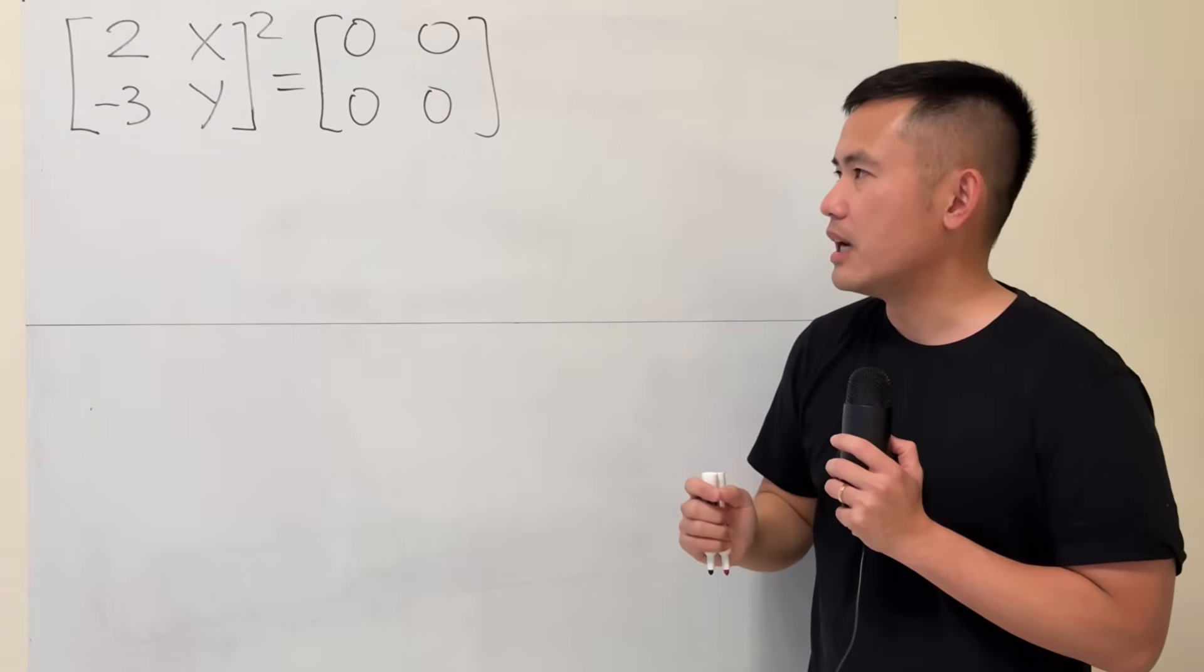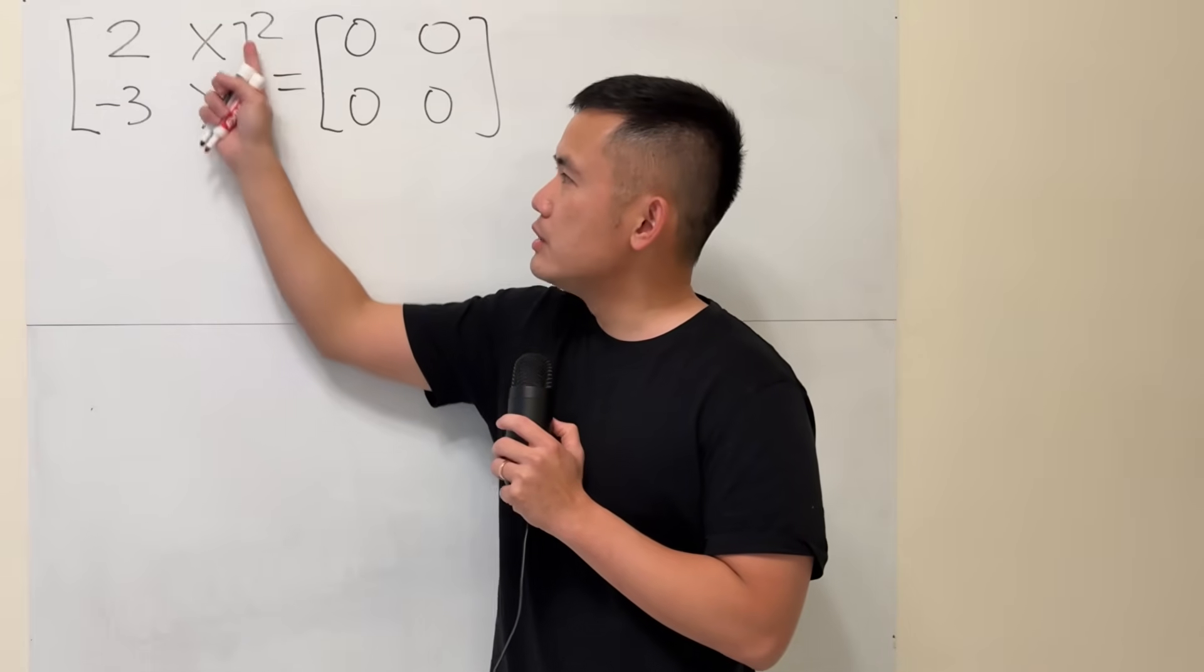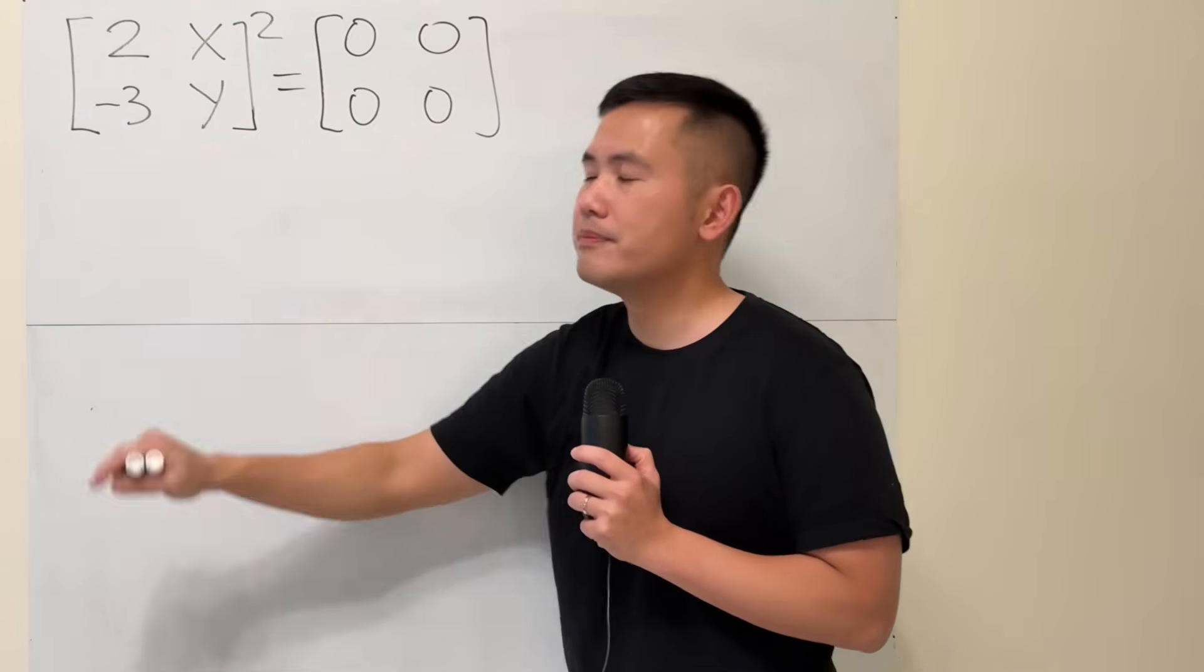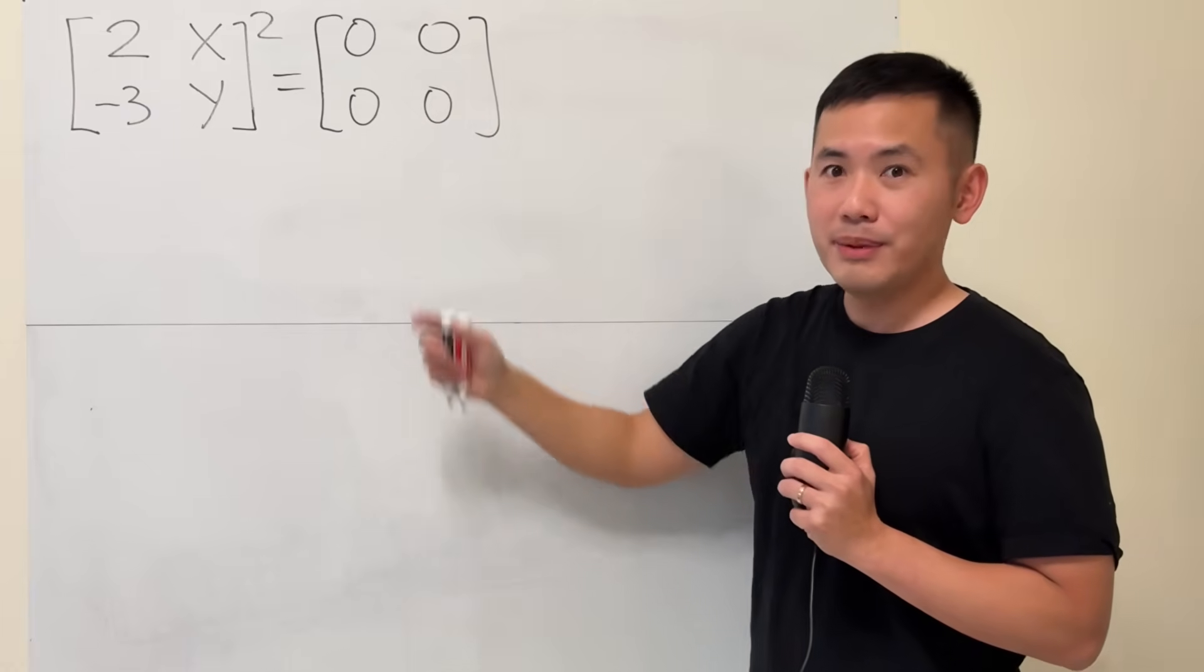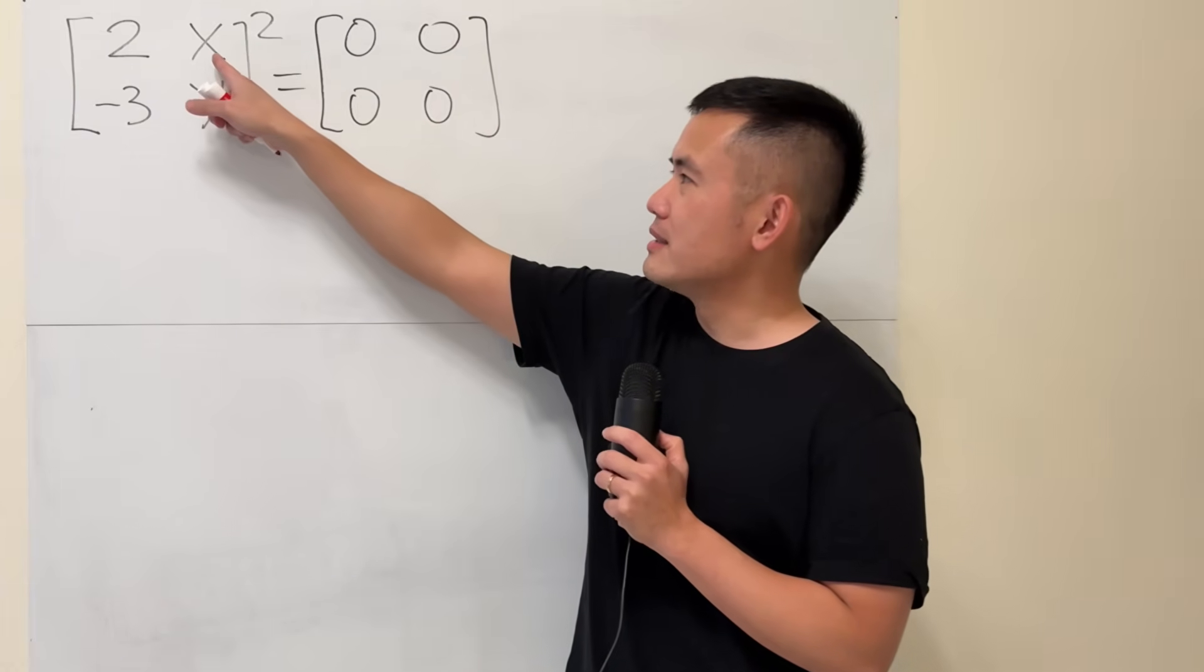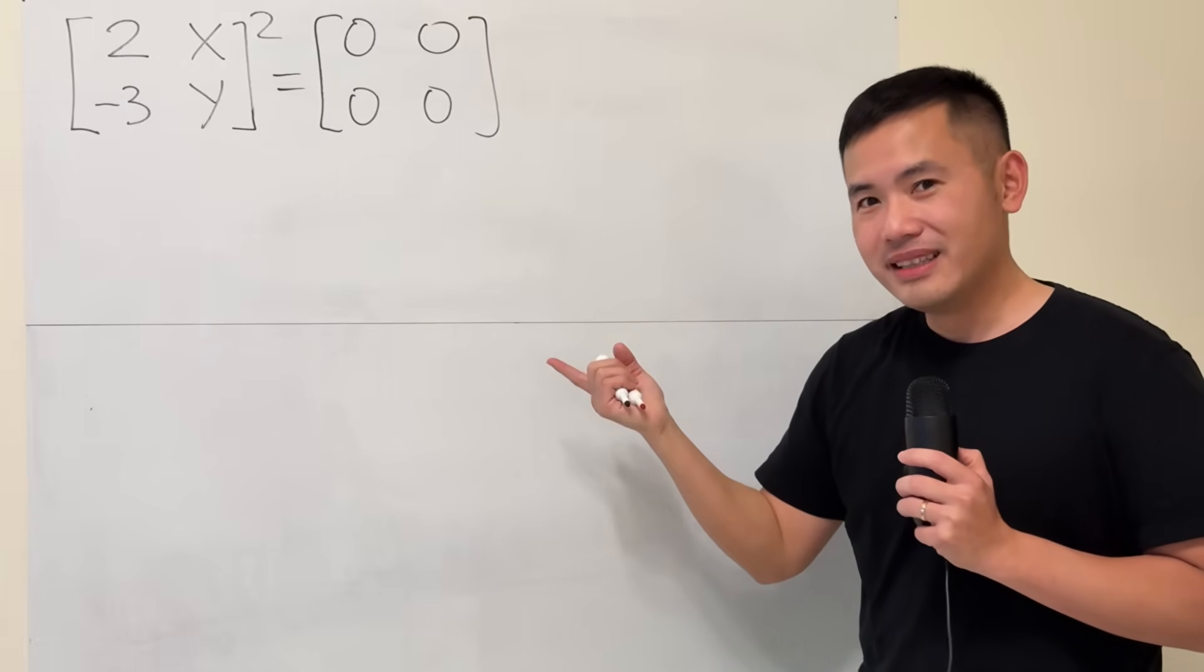The interesting part for this is that if this is possible, then we will have a non-zero matrix, because we already have 2 and negative 3 here, so it's non-zero. Square that, we end up with a zeros matrix. By the way, the answer is not just 0 here, 0 here. It's not going to work. Well, let's do it together.